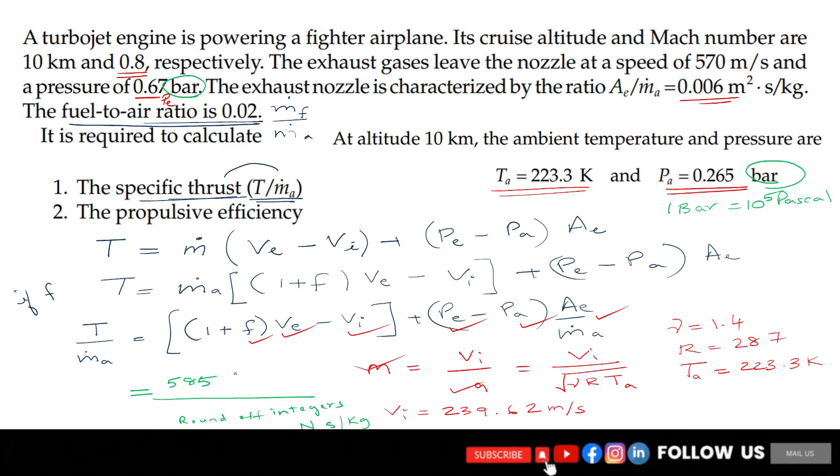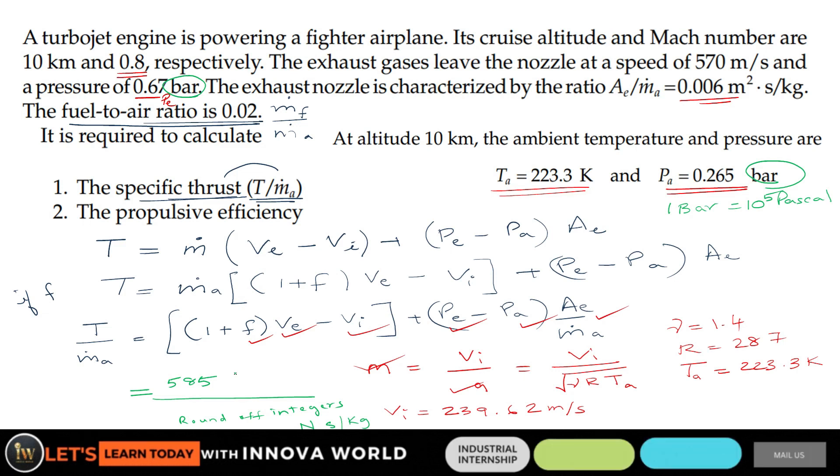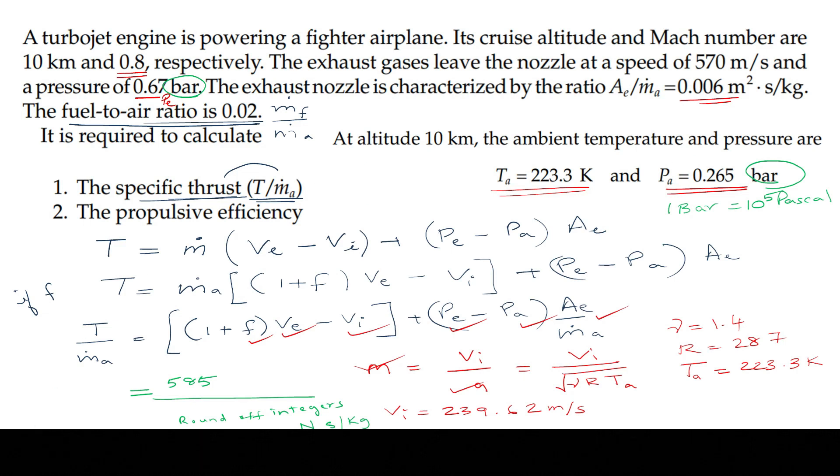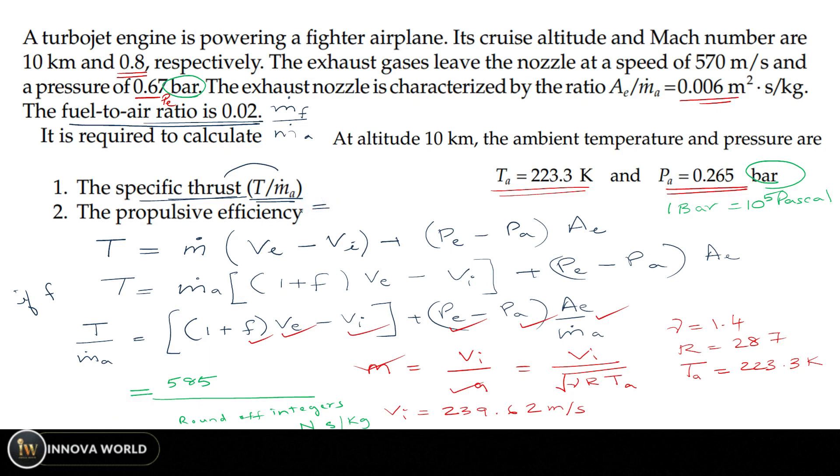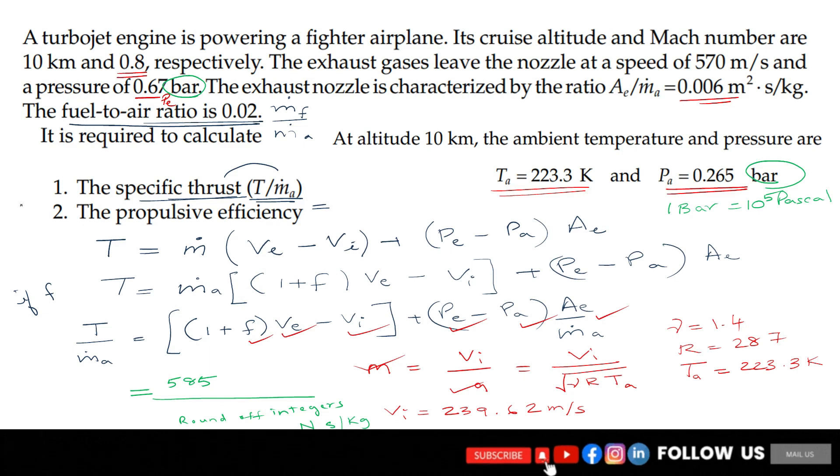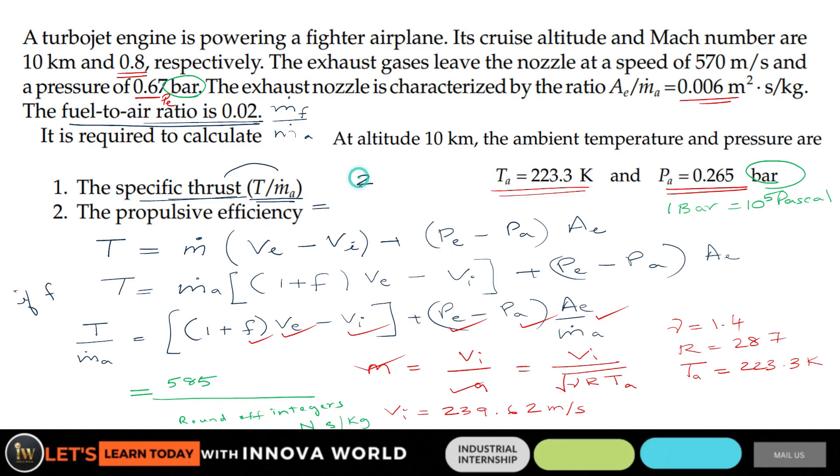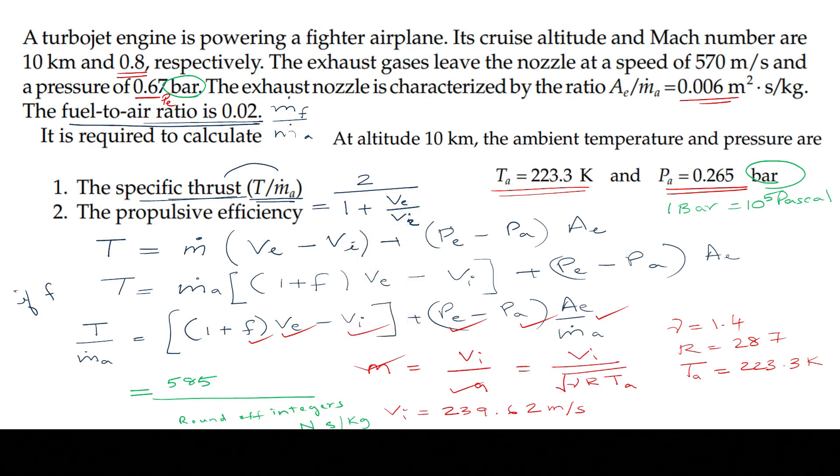Now we will find the next one: propulsive efficiency. You know that propulsive efficiency ηp = 2/(1 + Ve/Vi), that is the formula I have provided. But here we are not going to use that formula, and you should not use it if they have given fuel-to-air ratio. This is actually the general formula, the simplified form.